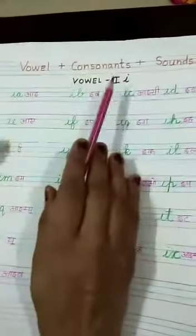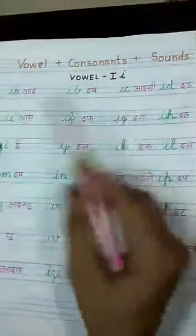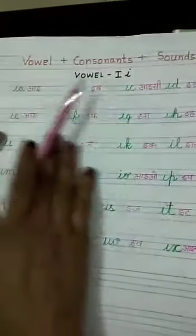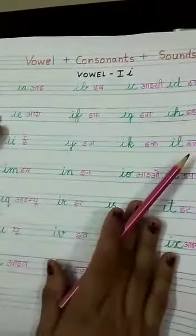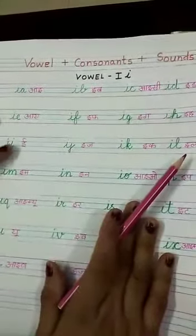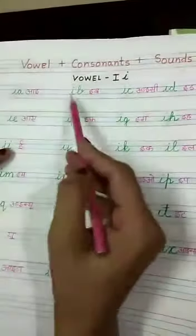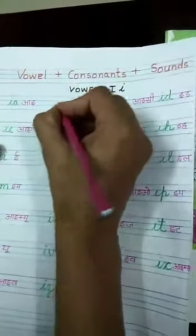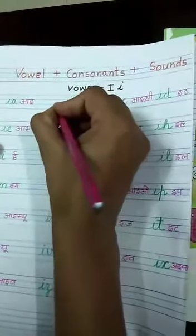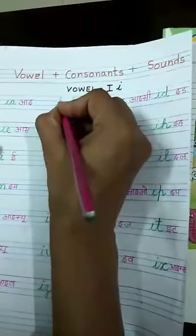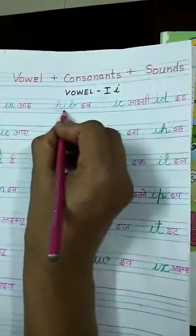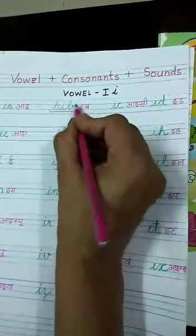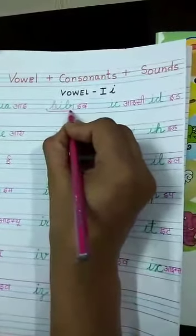Okay, these are vowel I's and consonants and their sounds. These words are meaningless. But these — like EB — kuch nii hota hai. But if I write B, this is a meaningful word. BIB, BIB, BIB.